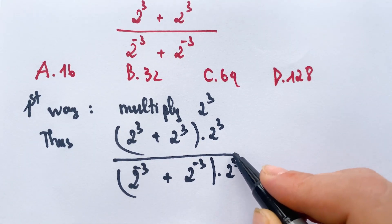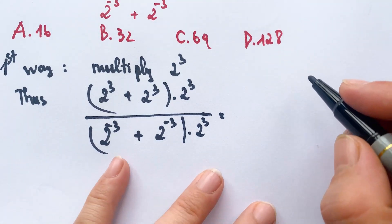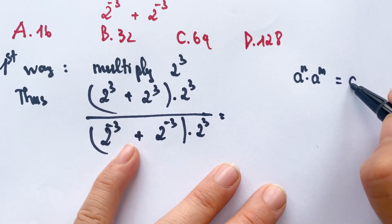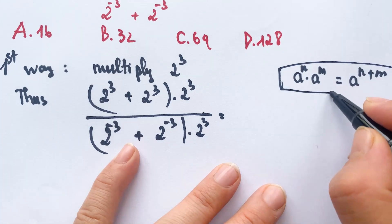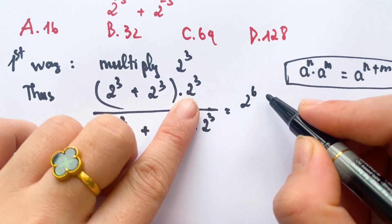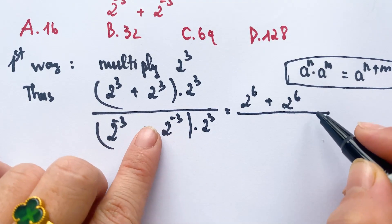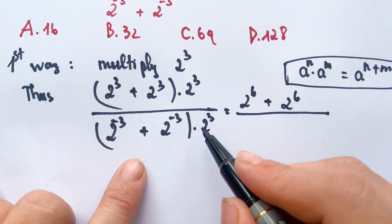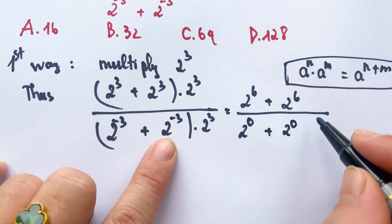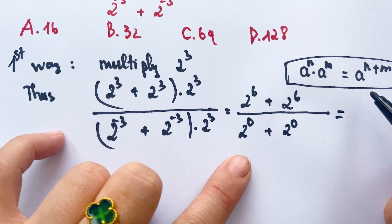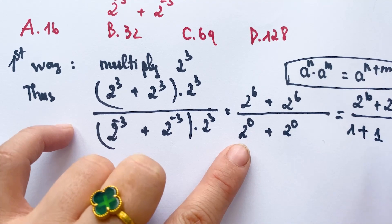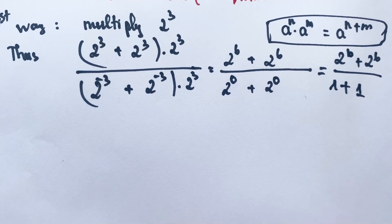We use the exponent rule: a to the power n times a to the power m equals a to the power n plus m. Applying this, we get two to the power six plus two to the power six in the numerator, and below we have two to the power minus three times two cubed, which equals two to the power zero plus two to the power zero, which is one plus one.